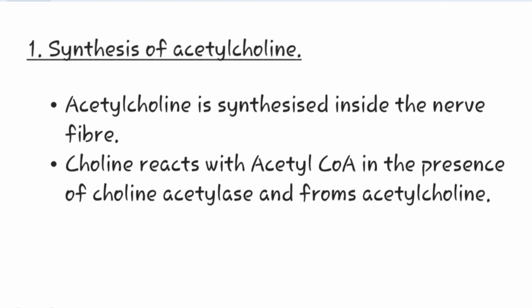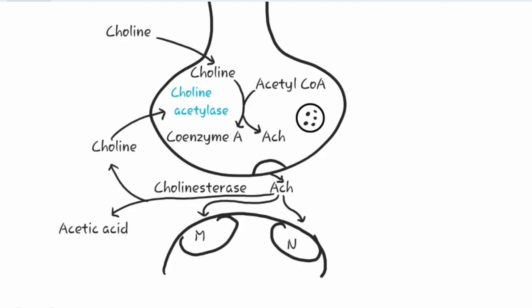The first step is synthesis of acetylcholine. Acetylcholine is synthesized inside the nerve fiber. Choline reacts with acetyl-CoA in the presence of the enzyme choline acetylase and forms acetylcholine, along with coenzyme A. This is the process of synthesis occurring in the nerve fiber, as shown in the diagrammatic representation.